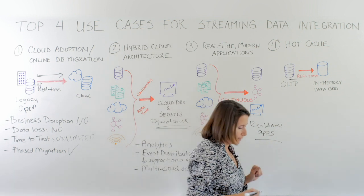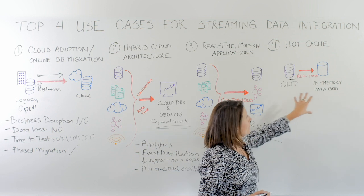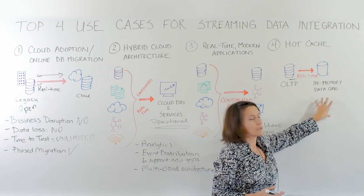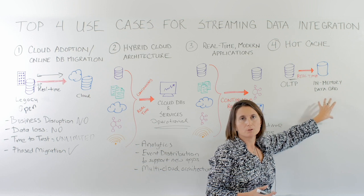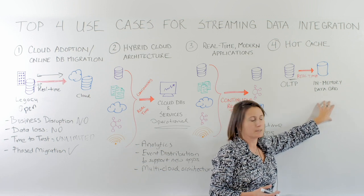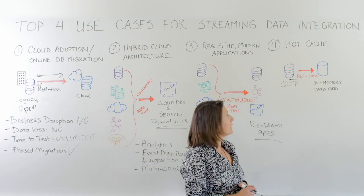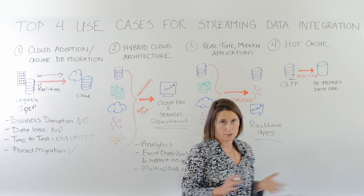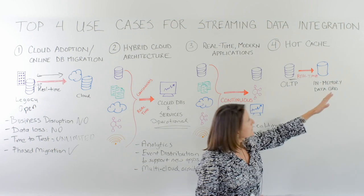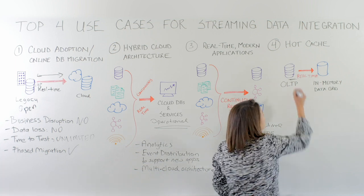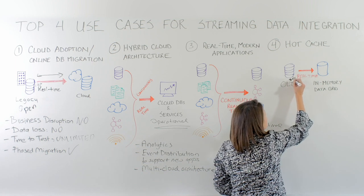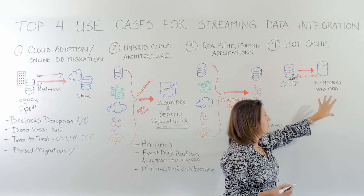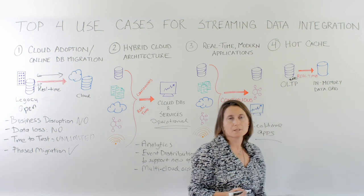Fourth, and not the least: when you have an in-memory data grid to help with your data retrieval performance, you need to make sure it is continuously up to date so that you can rely on that data. If the source system is updated but your cache is not updated, it can create business problems. Streaming data integration, by continuously moving real-time data using CDC technology, helps you keep your data grid up to date so it can be your hot cache to support your business with fresh data.